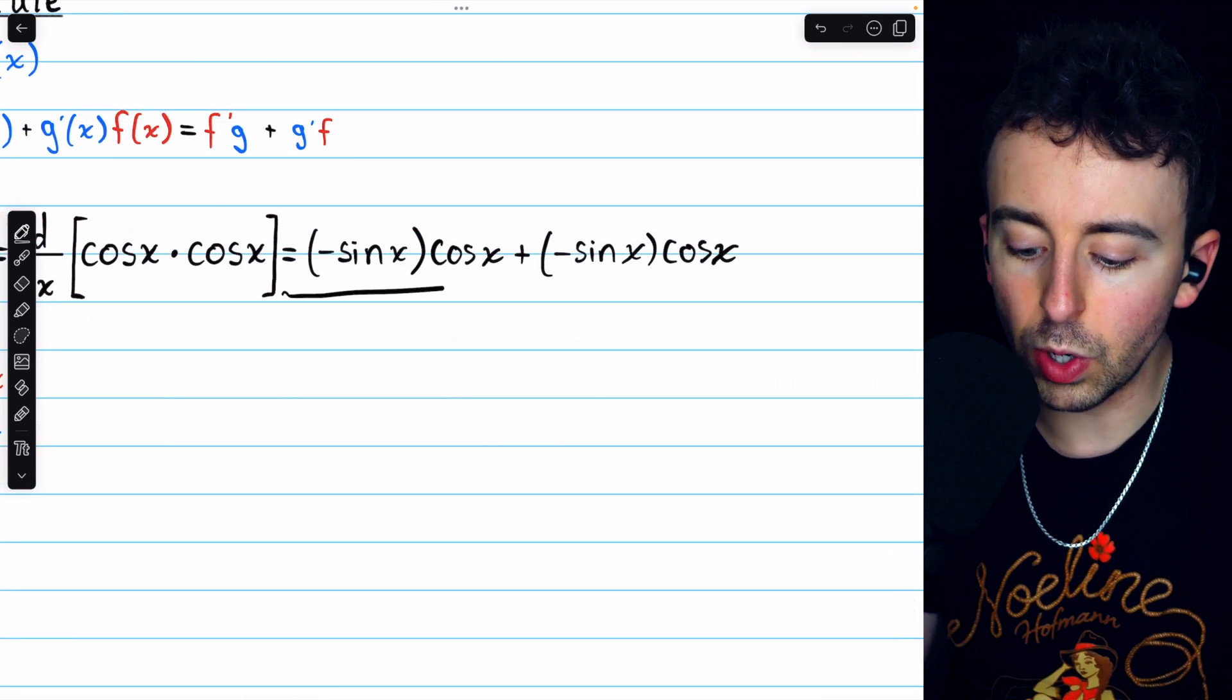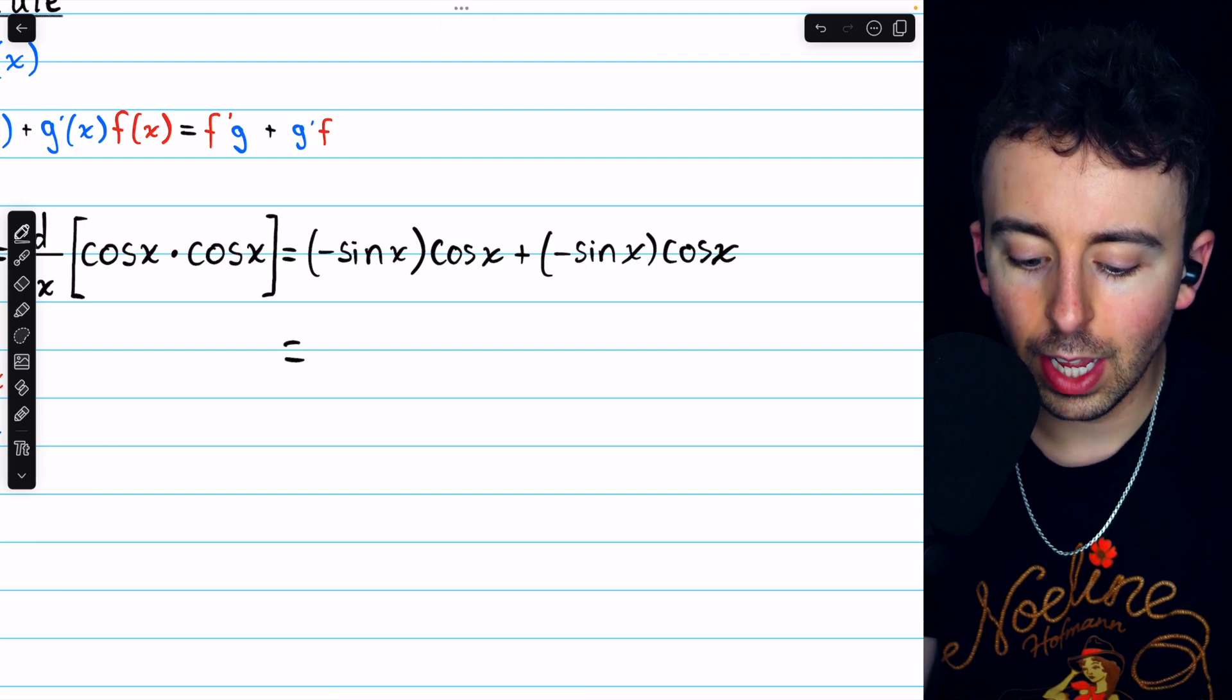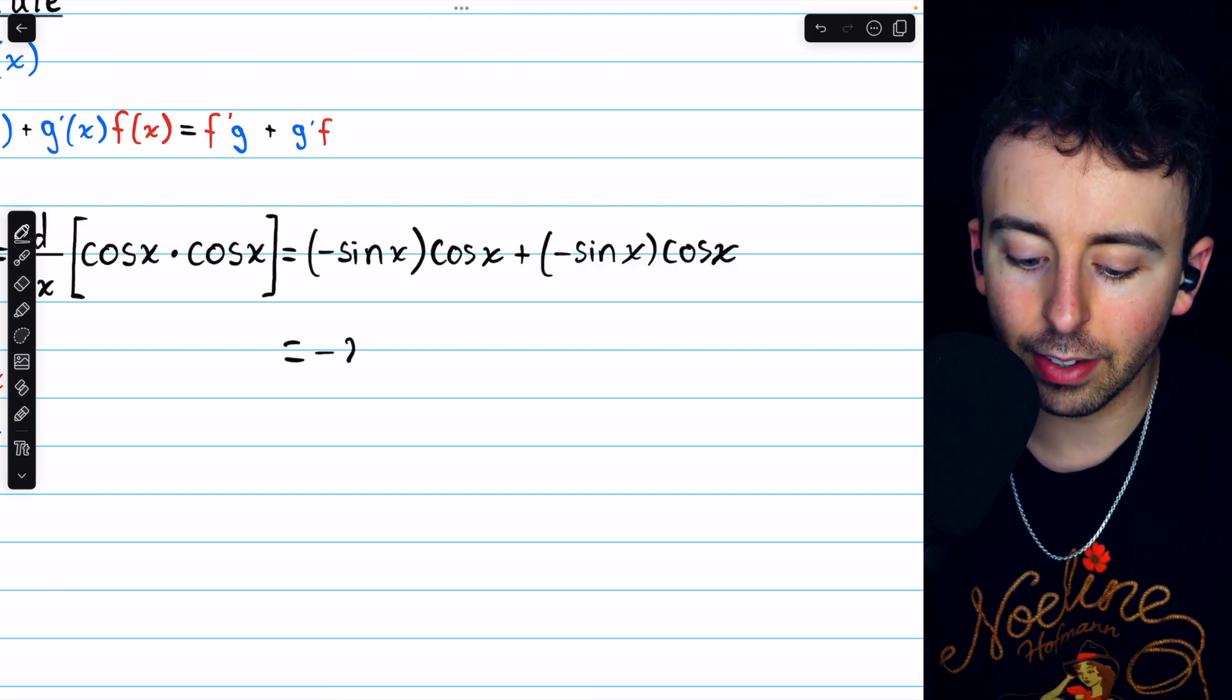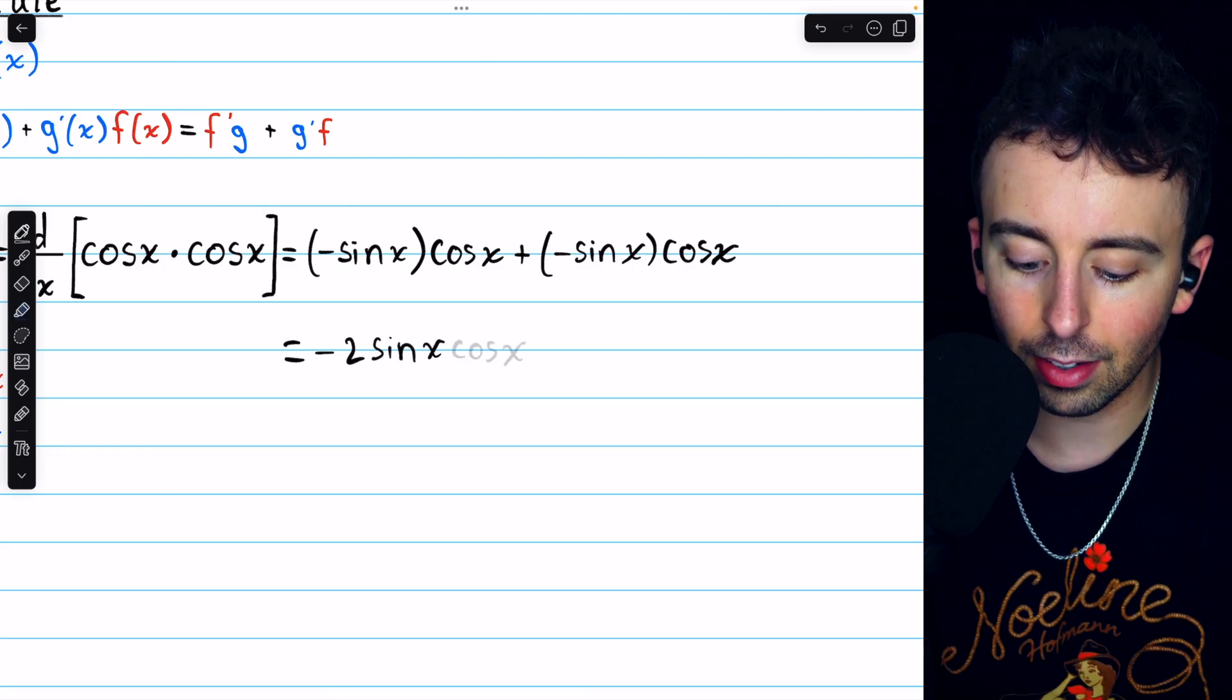Applying the product rule, we get that as our derivative, and since we have two of the same term, we can simplify this to negative two sine x cosine x.